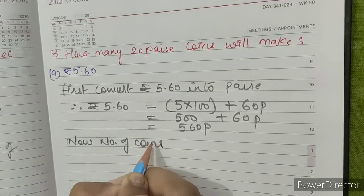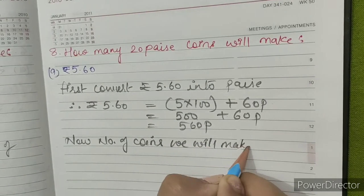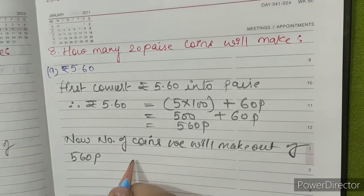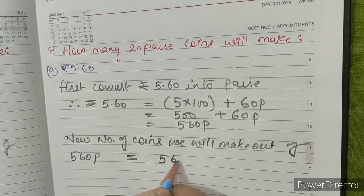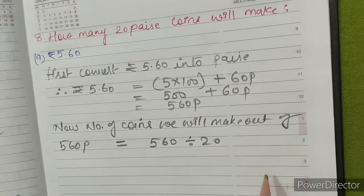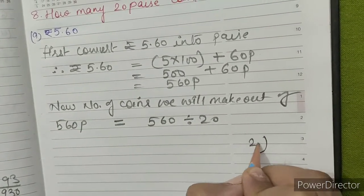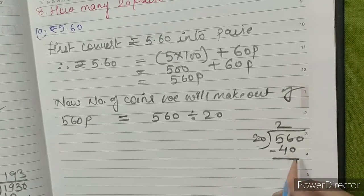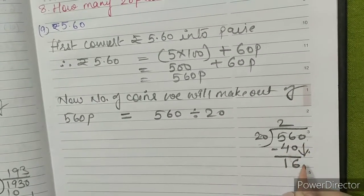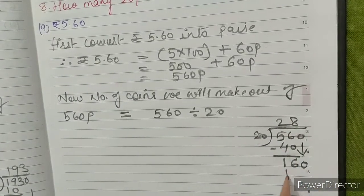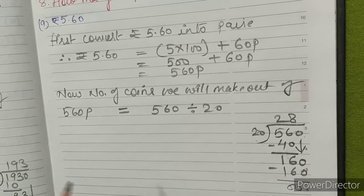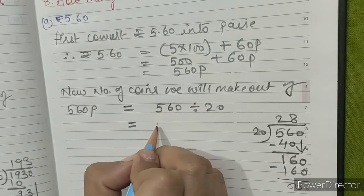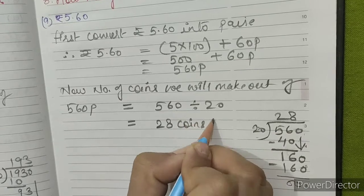Now, the number of coins we will make out of 560 paise equals 560 divided by 20. 2 into 2 is 40; 56 minus 40, we get 16. Bring down 0: 2 into 8 is 160. So 560 divided by 20 gives us 28 coins. This is our answer.